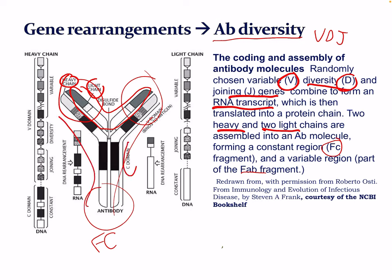We can see the common domain and variable domain in the antibody structure. The common domain is the same for different classes — for example, IgM will have a certain common domain — while the variable region changes depending on each pathogen or epitope that it binds to.